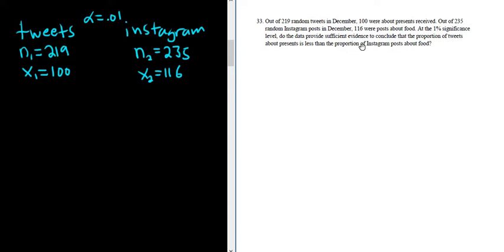Do the data provide sufficient evidence to conclude that the proportion of tweets about presents is less than the proportion of Instagram posts about food? So since this is a hypothesis test, we should go through the five steps. The very first step in a hypothesis test is to set up the null and alternative hypotheses. So H sub 0 is the null, and we have two population proportions. So it's always p1 equals p2, no matter what. And then for the alternative hypothesis, in this case it said tweets less than Instagram posts. So it's p sub 1 less than p sub 2.